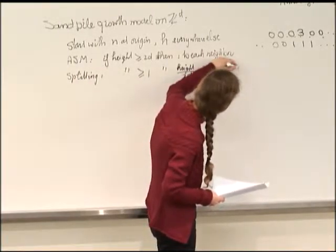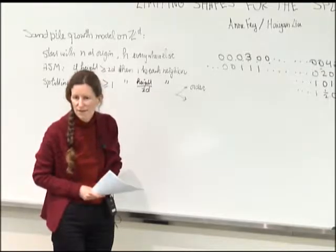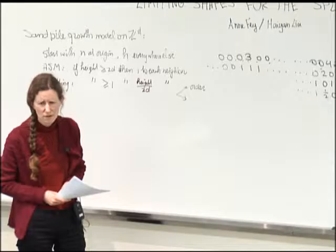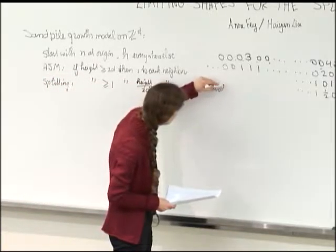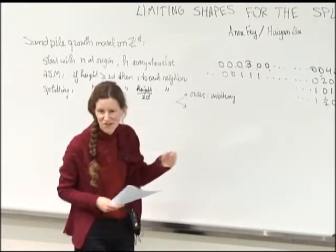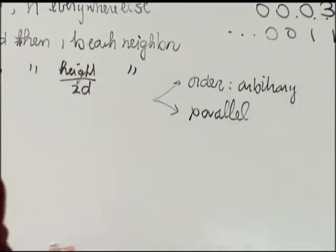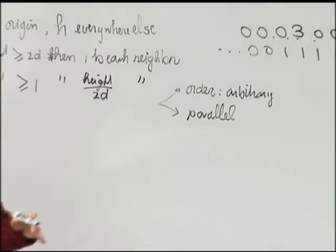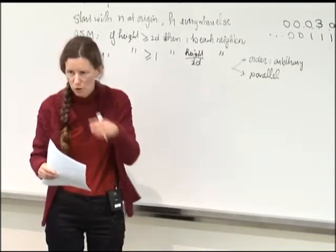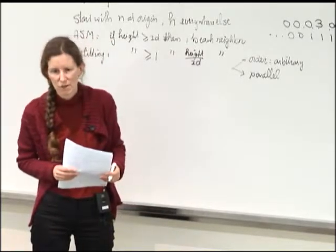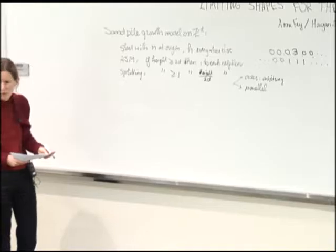If you keep this splitting but correct the rules so that you only send the excess and leave mass 1 at the site, then this problem disappears. That has another name — the 'visible sand pile.' But then it doesn't do the nice things that our model does. So we focused on two possibilities: either we have results valid for any splitting order, but mostly we focus on parallel order — every time step, you locate all sites that are at least one and split them all at the same time.